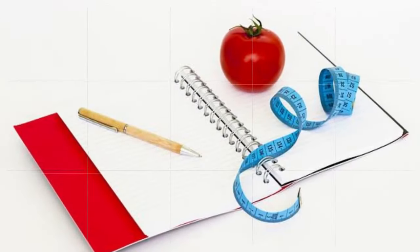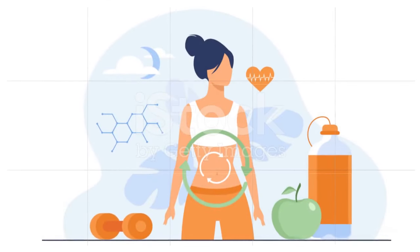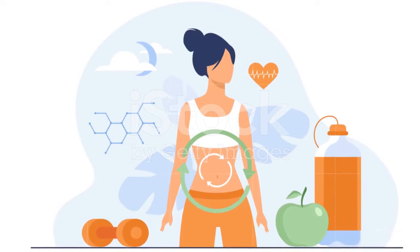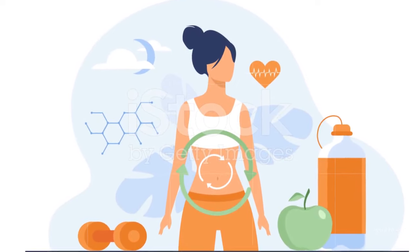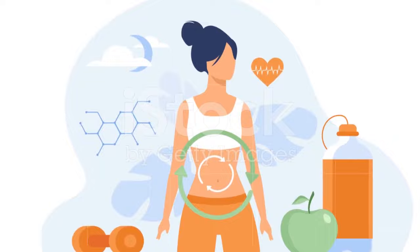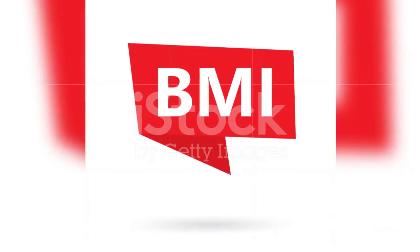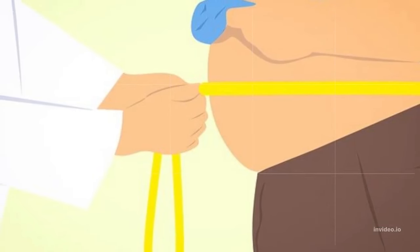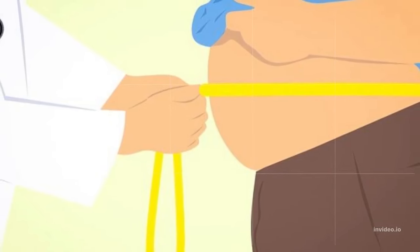Normal, healthy weight. BMI scores in the range of 18.5 to 25 are considered a healthy BMI. This is the most desirable BMI range for the general population as a whole to aim for. Overweight. BMI scores between 25 and 30 are classified as overweight, which is having more body fat than is healthy. Within this range, it is more likely individuals will start to experience the negative health implications of being overweight.